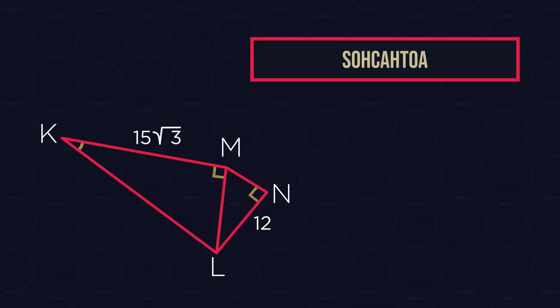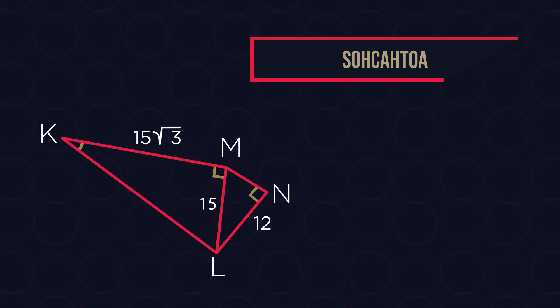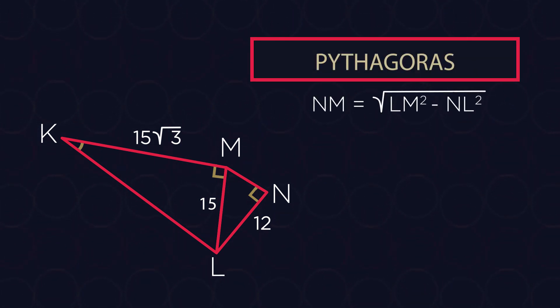Using SOHCAHTOA rules, we know that ML equals KM times the tangent of angle MKL, which equals 15. Now, since we know two sides of triangle NLM, we can use Pythagoras Theorem to find the length of MN, which is 9.